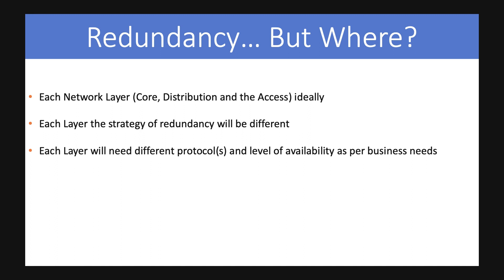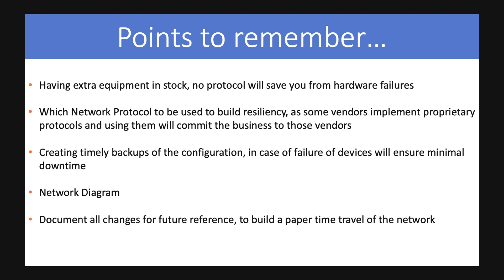Each layer has a different strategy and different protocols involved. We need to decide upon the protocol and what level of availability we need as per our business needs. There are certain points to consider before making a redundant network. You need to have extra equipment in stock. If you have configured the most efficient BGP, OSPF, MPLS, or MST solution, it means nothing if you don't have spare equipment to replace a failed device. You cannot wait for equipment to come from another city or be shipped from your vendor.